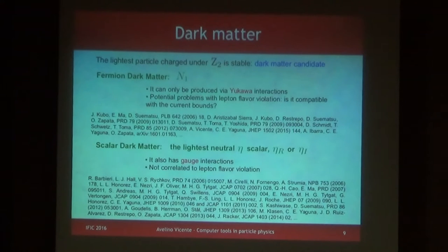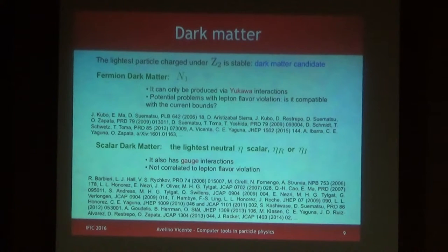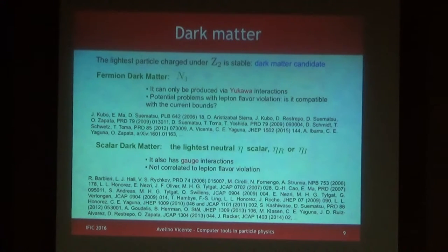Because you have a Z2 symmetry that by assumption is not broken by anything, the lightest particle with minus charge under the Z2 is a stable dark matter candidate. You have two choices: it could be the lightest right-handed neutrino, or the lightest of the eta components. This has been explored especially for the scalar case, and there are already probably more than 20 or 30 papers. This model has become very fashionable because you can have neutrino masses and dark matter in a simple way — you just need a few more ingredients beyond the standard model.